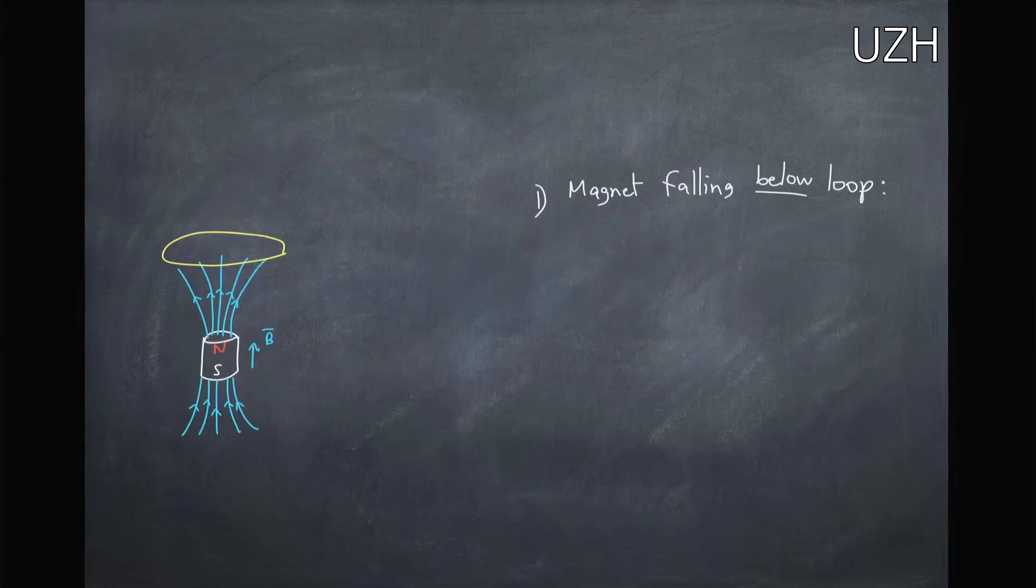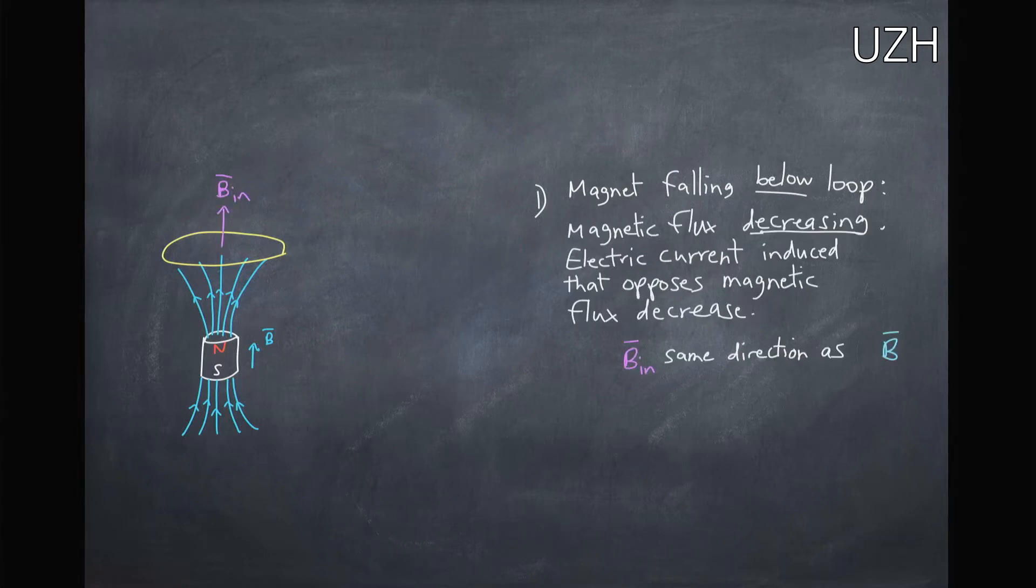Now let's consider the magnet below the loop. So now it's below the loop and the magnetic flux through the loop would be decreasing, and we're going to get an electric current induced in this loop that would want to oppose this decrease. This is Lenz's law—we always get an opposition to the change in magnetic flux.